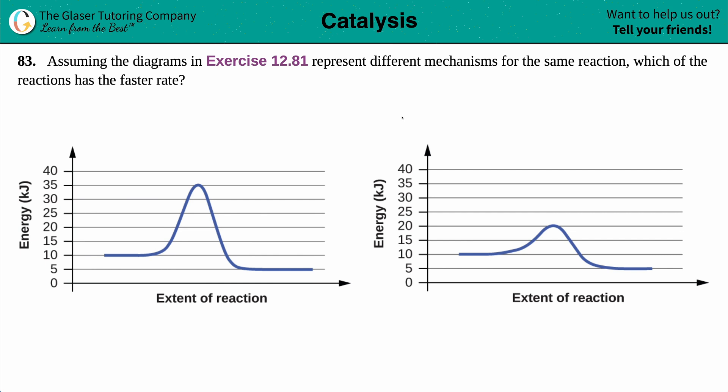Number 83, assuming the diagrams in exercise 12.81 represent different mechanisms but for the same reaction, which of the reactions has the faster rate? Okay, so I went to exercise 12.81, I pulled up the two reaction diagrams that it's talking about, and we have to assume that this is the same reaction, which means that it's the same starting and ending point, or else we wouldn't be able to answer this question. We have to keep at least one thing constant.